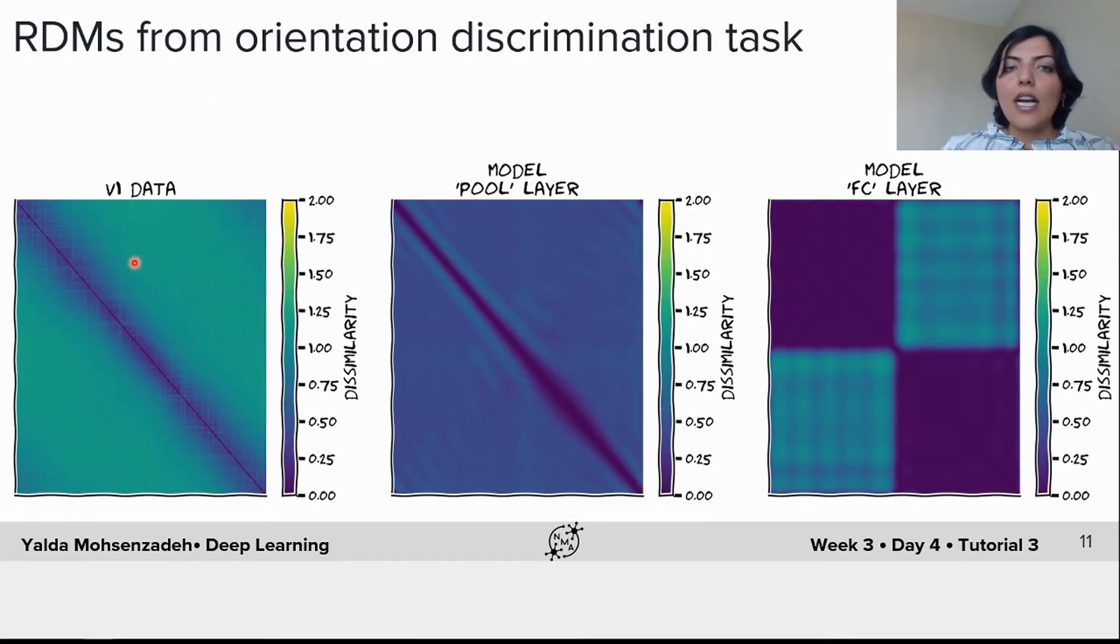Here you can see the RDMs from the orientation discrimination task, which is computed from brain data, and from model pooling layer activations, and from model fully connected layer activations. As you see, the pooling layer RDM shows a more similar structure to V1 RDM.